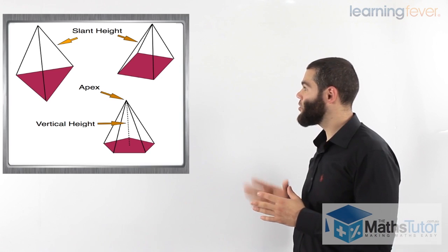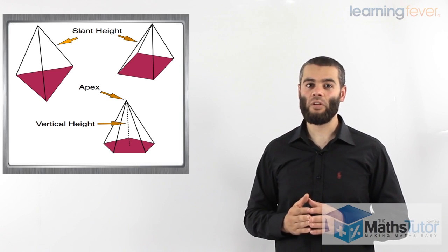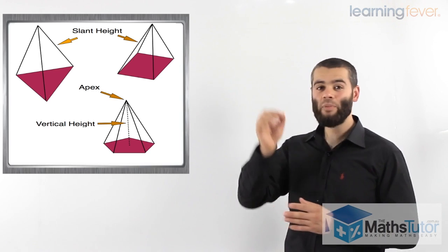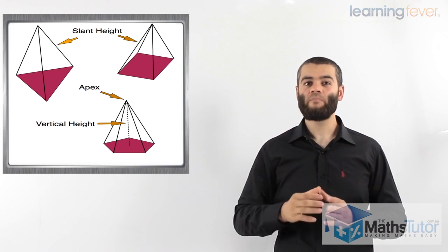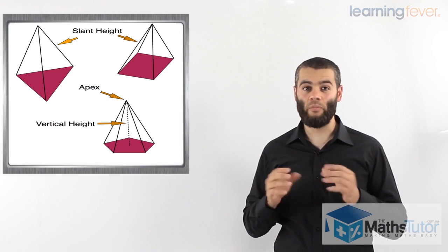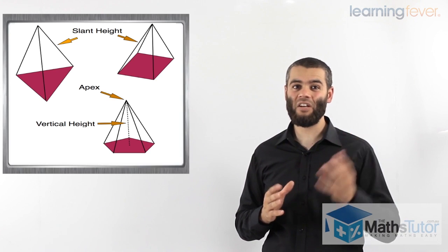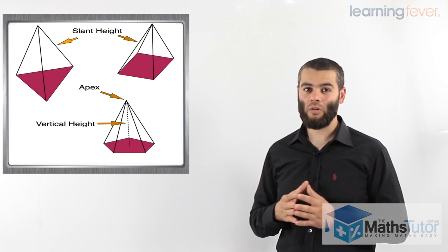And we also know that the pyramid has what we know as the vertical height. The vertical height is the height from the apex down to the center of the pyramid, right down the middle of the base of the pyramid. So, very important to identify the difference between the slant height and the vertical height.